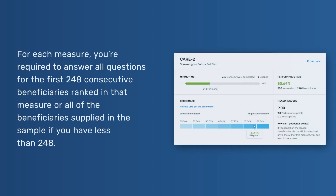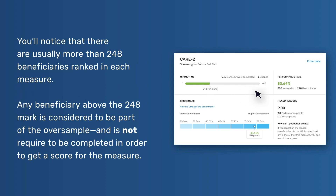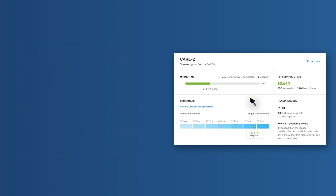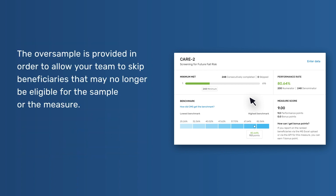For each measure, you're required to answer all questions for the first 248 consecutive beneficiaries ranked in that measure, or all of the beneficiaries supplied in the sample if you have less than 248. Any beneficiary above the 248 mark is considered to be part of the oversample and is not required to be completed in order to get a score for the measure. The oversample is provided to allow your team to skip beneficiaries that may no longer be eligible for the sample or the measure.